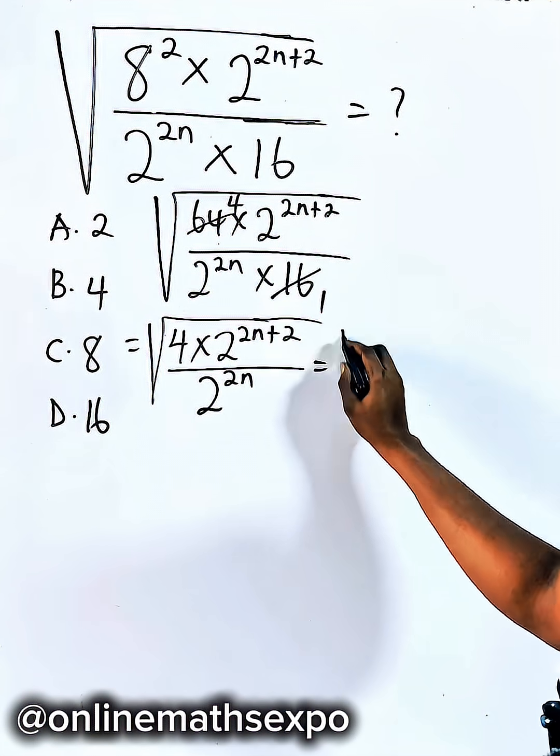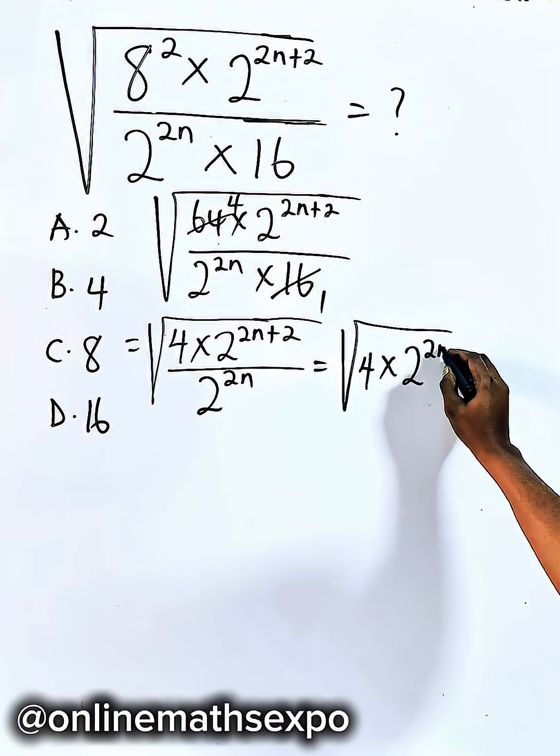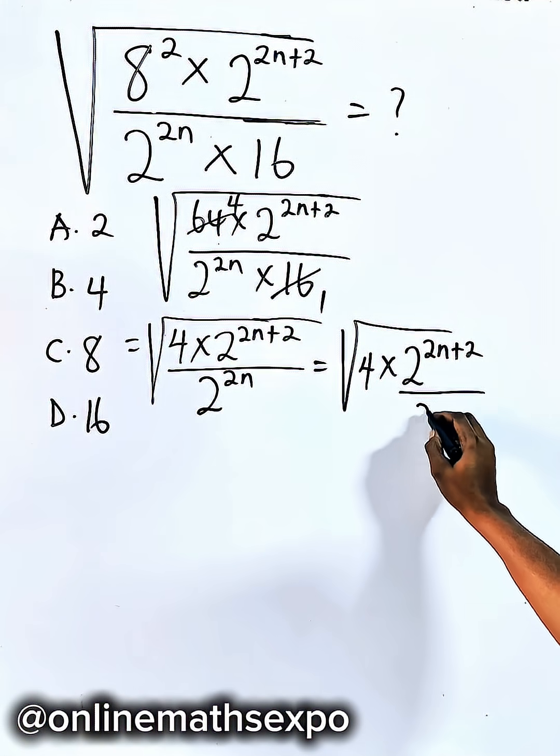This can also be written as square root of 4 times 2 to the power of 2n plus 2 divided by this. These two are the same.